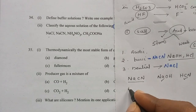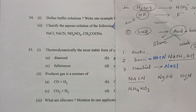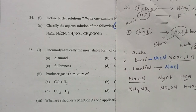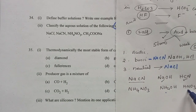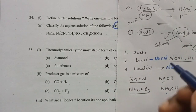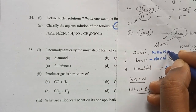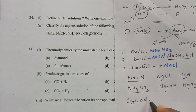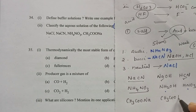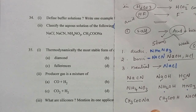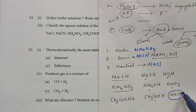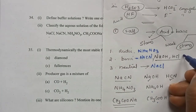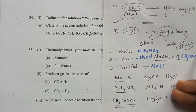NH4NO3 comes from ammonium hydroxide — a weak base — and HNO3 — a strong acid. Weak base and strong acid gives an acidic salt. So NH4NO3 is acidic. CH3COONa comes from CH3COOH — a weak acid — and NaOH — a strong base. Weak acid and strong base gives a basic salt. So CH3COONa is basic.